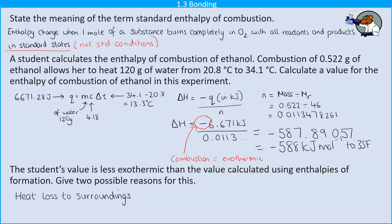And then the second reason is that the combustion probably isn't complete. So if we have some incomplete combustion, then that's much less efficient. It releases less energy and therefore we're going to have a less exothermic value.